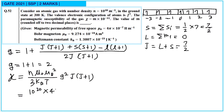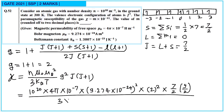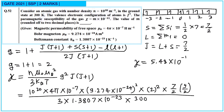Substituting: n = 10²⁰, μ₀ = 4π × 10⁻⁷, μ_B = 9.274 × 10⁻²⁴ J/T, g² = 4, J = 7/2 so J(J+1) = (7/2)(9/2), k_B = 1.3807 × 10⁻²³, T = 300 K. After calculation, χ = 5.48 × 10⁻¹¹, so m = 5.48. The accepted answer range is 5.40 to 5.50. These were all the solid-state physics questions from the GATE 2021 paper. Please give the video a thumbs up and subscribe for more videos.